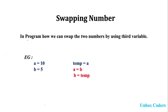In the next line, a is equal to b — that is, I assign the value of b to a. The b value is 5, so now the a value is also 5. After this, b is equal to temp, and the temp value is 10, which was the original value of a.